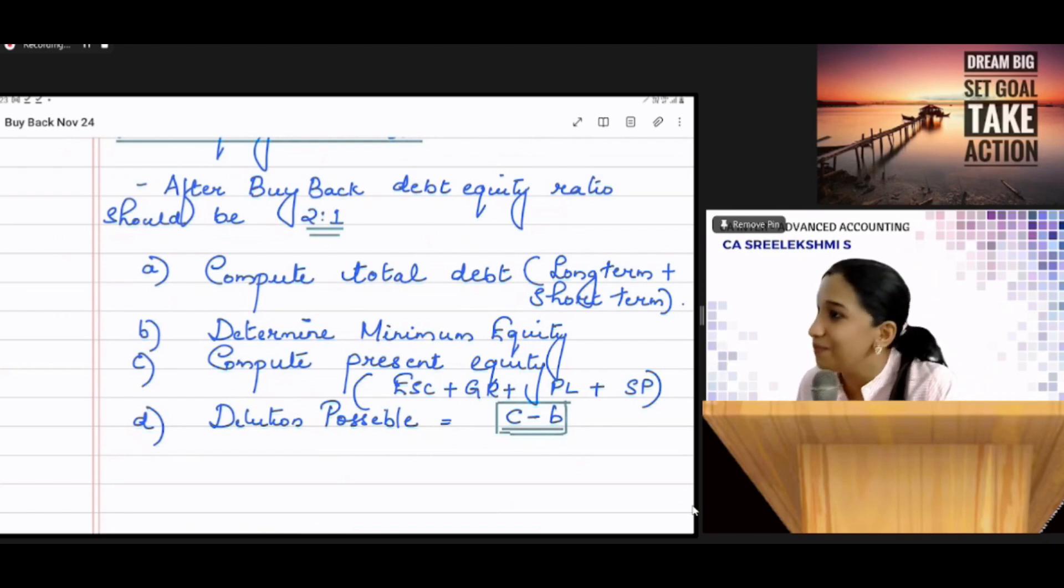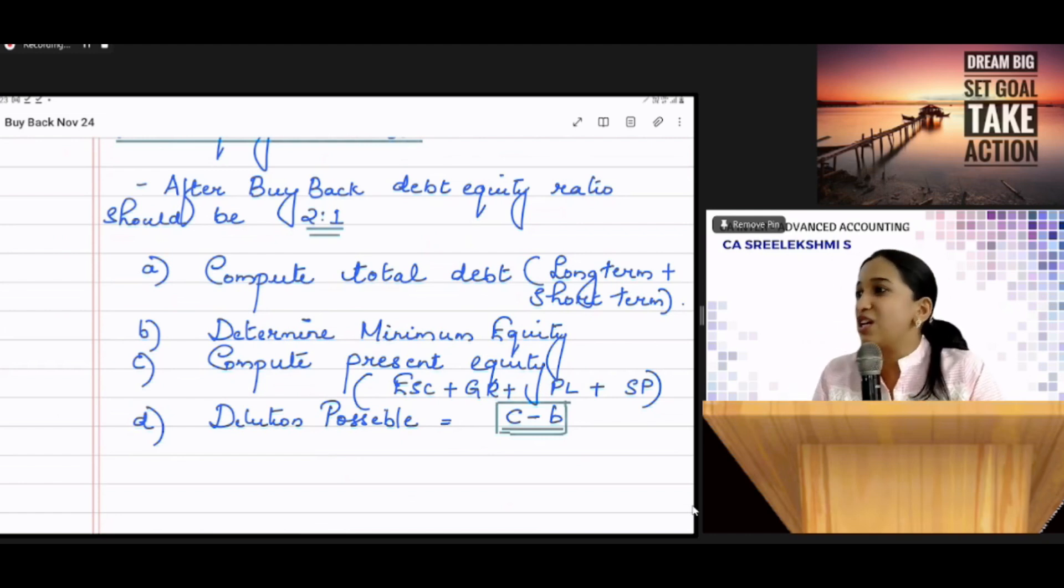But technically, we have to do simultaneous equation. X is equal to amount of buyback. Y is equal to transfer to reserve. So, X is equal to dilution possible minus Y. So, now establish a relationship between X and Y and solve it. Both cases, both way you do, you will get the same answer.